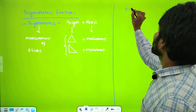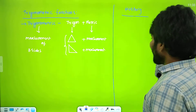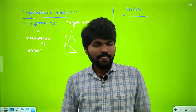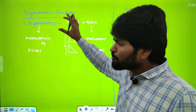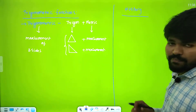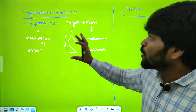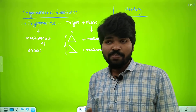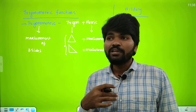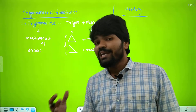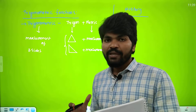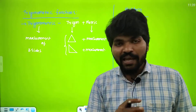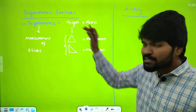I wanted to give some basic history about trigonometry. Why? Because everybody feels that mathematics is very difficult, and they feel that way because they don't know how a particular topic was developed. If you know the history, you will definitely understand the concept better. Every mathematics topic — whether it's sets, functions, binomial theorem, limits, derivatives, probability, or sequences and series — every topic has a great history behind it. Similarly, trigonometric functions also have a great history.